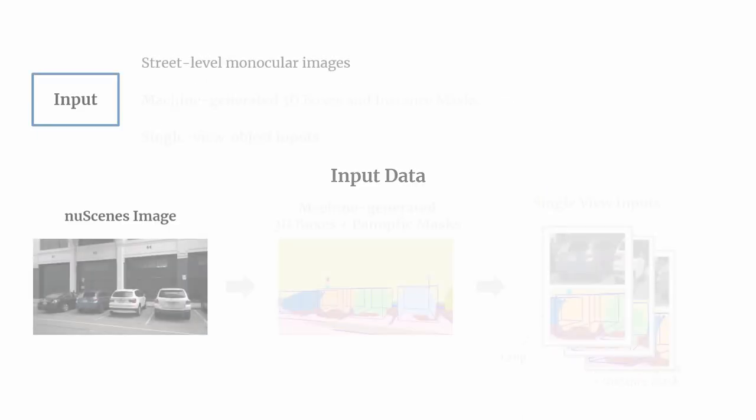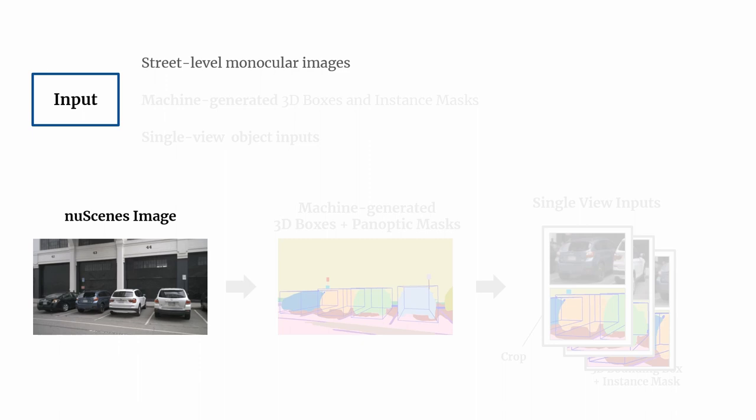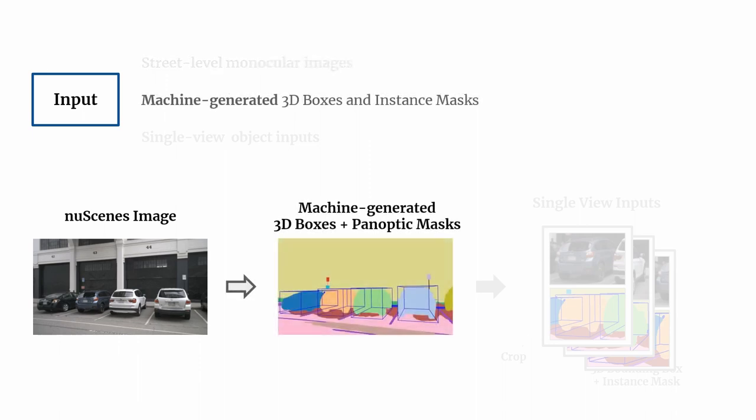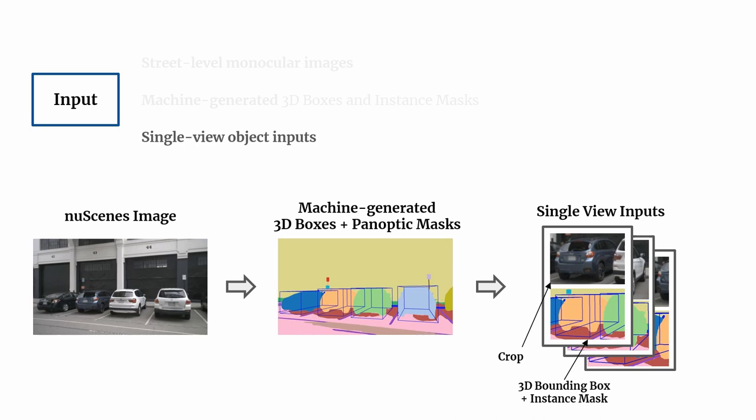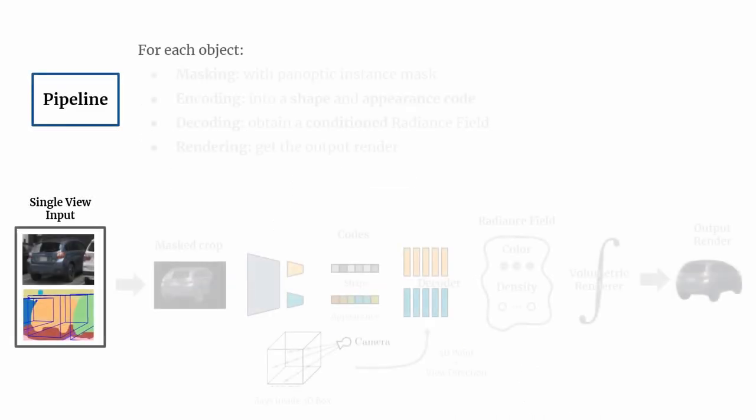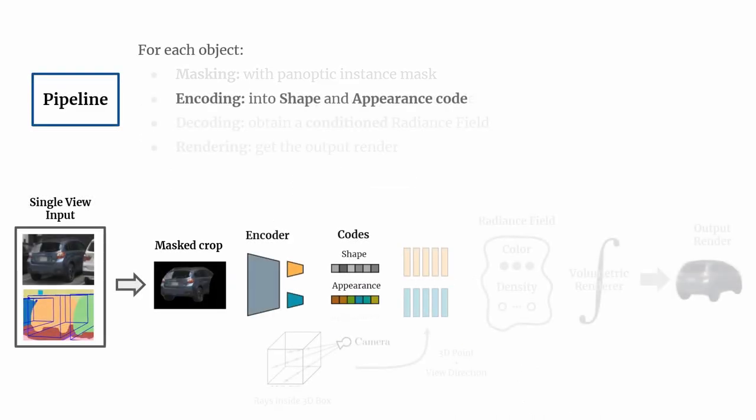We rely on large-scale monocular street-level images and use 3D monocular detections and panoptic segmentation from off-the-shelf models in order to create single view inputs. For each object, we first crop and mask the input image and encode the object into shape and appearance codes.